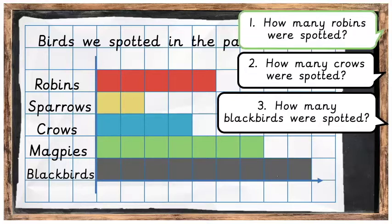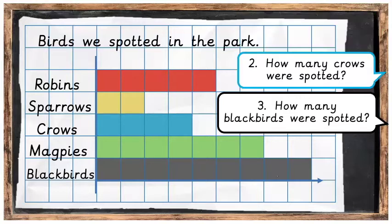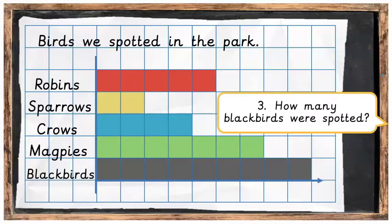Well done! OK, here are the answers. Question 1: how many robins were spotted? If we count up the blocks, there were of course 5 robins spotted. How many crows were spotted? There were of course 4 crows spotted. And question 3: how many blackbirds were spotted? If we count up all the blocks, we will find there were of course 9 blackbirds spotted.